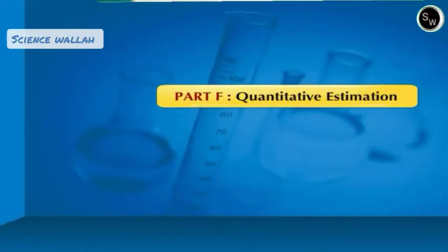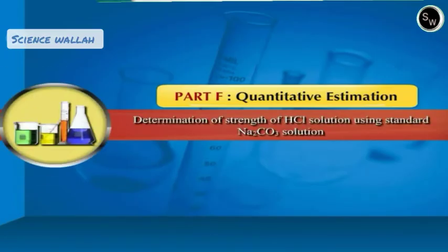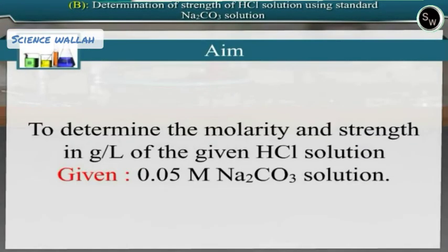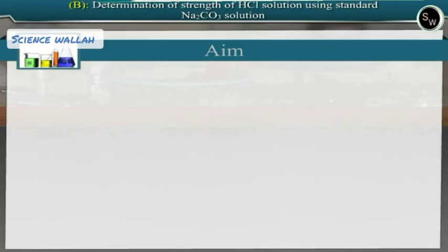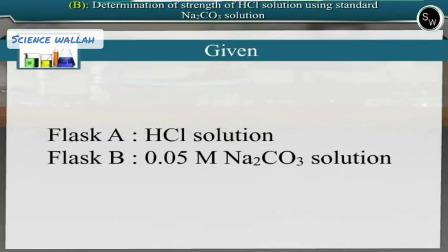Part F: Quantitative Estimation — Determination of Strength of Hydrochloric Acid Solution Using Standard Sodium Carbonate Solution. Our aim here is to determine the molarity and strength in grams per liter of the given hydrochloric acid solution. Given to us is a 0.05 molar sodium carbonate solution. We are given two flasks labeled A and B: flask A contains hydrochloric acid solution, flask B contains 0.05 molar sodium carbonate solution.